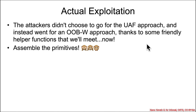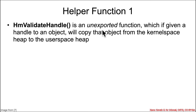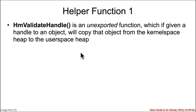That out-of-bounds write was possible thanks to some helper functions. Helper function one is called HmValidateHandle, an unexported function, meaning third-party software cannot look it up or call it directly. Given a handle to a Windows GUI object, it copies that object from kernel space heap into user space heap — a legacy of code that once ran in user space but was moved to kernel space for efficiency.